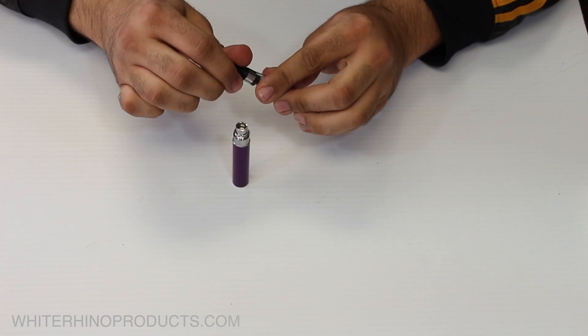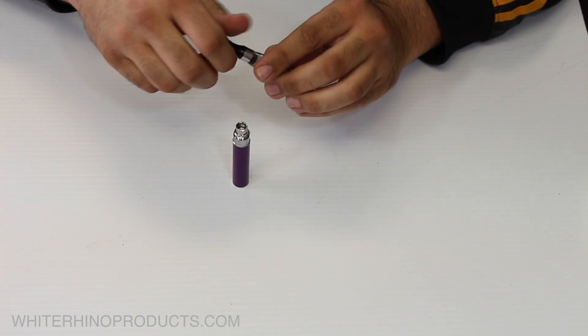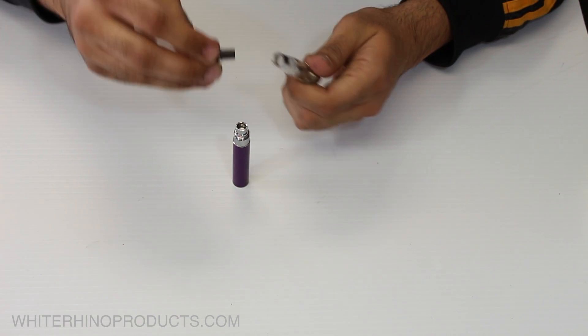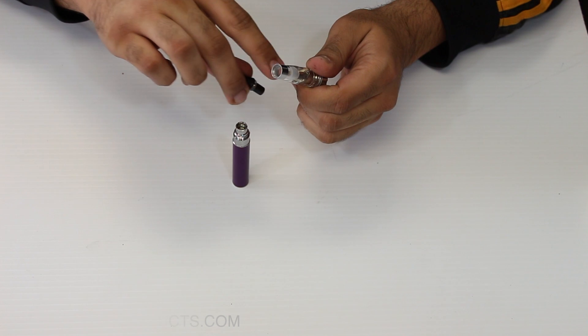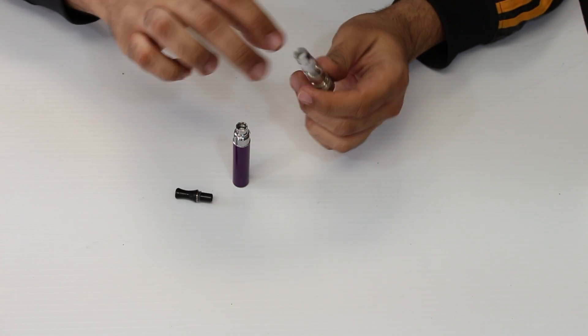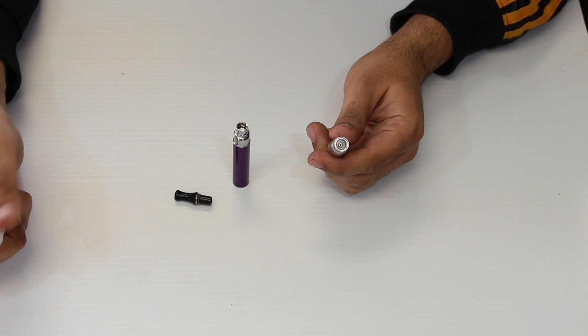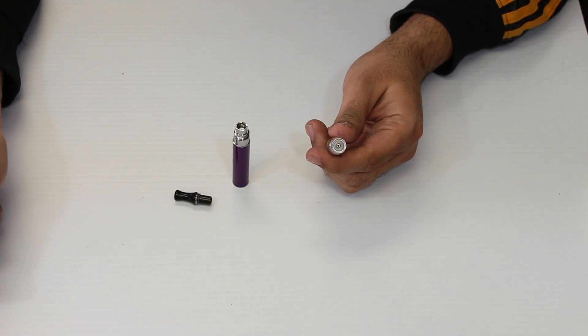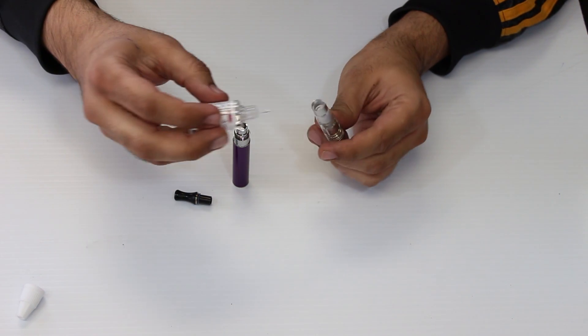First things first - like when you're filling it, I know I mentioned this already - just make sure you're filling it at an angle and make sure that the fluid is going down the side, not down the middle. Also, we always recommend using the White Rhino e-juice that we offer, just because it does come with the fine needle tip for filling. And again, I went over that earlier.